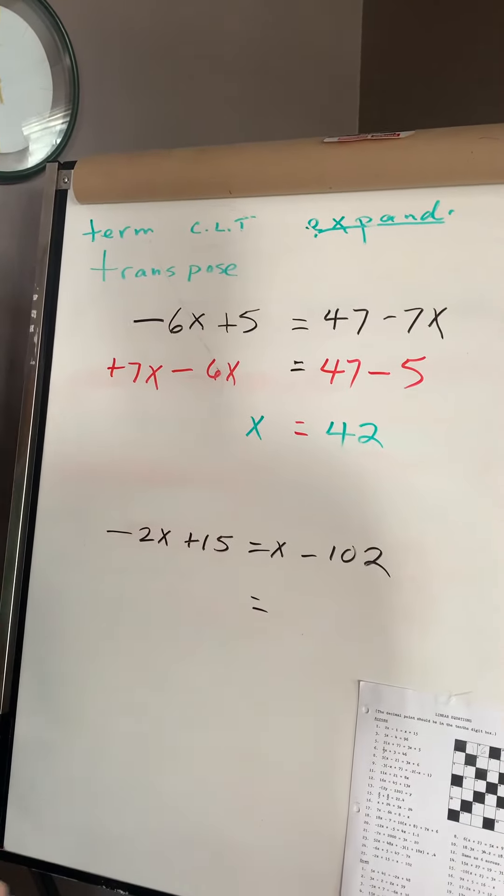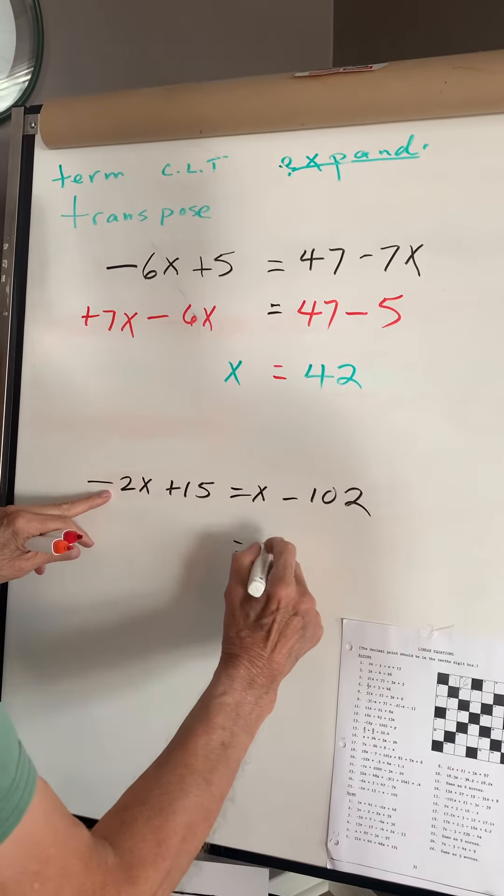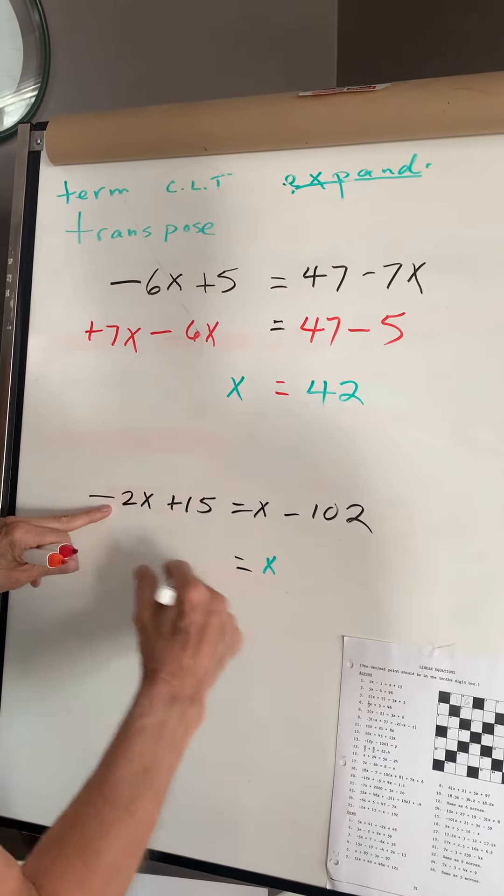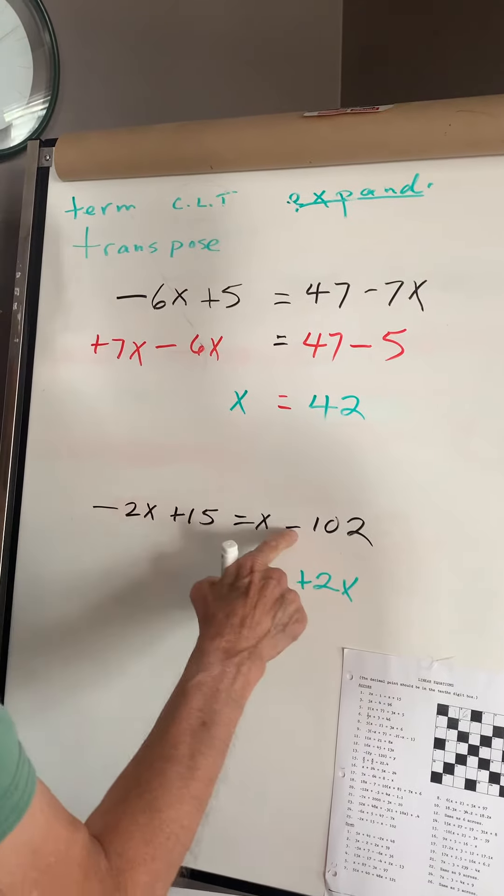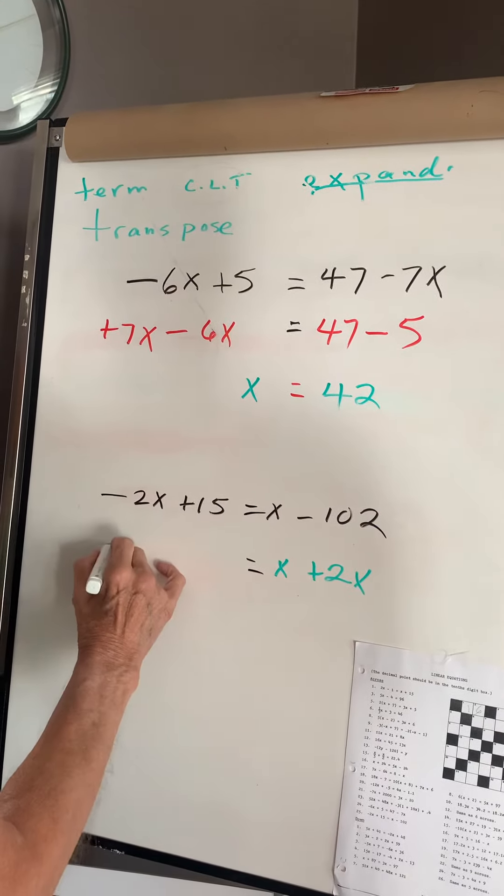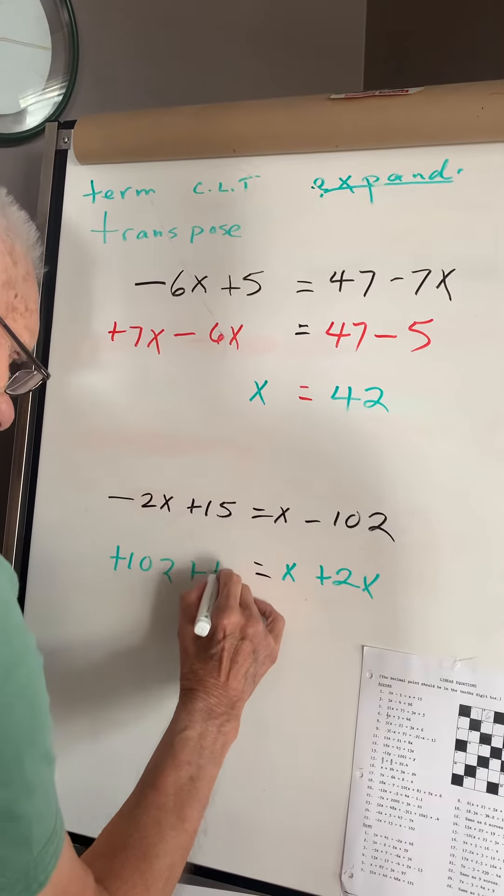And the next one over here. This one, I'm going to move this one to the right, so it's positive. This is negative. I'm going to make it positive. 102 plus 15.